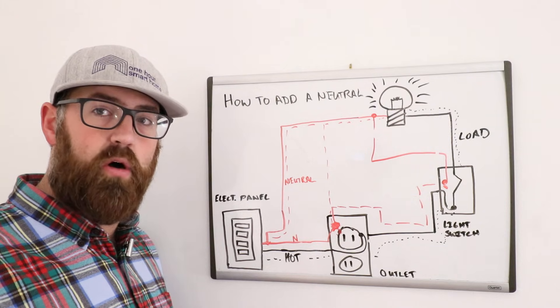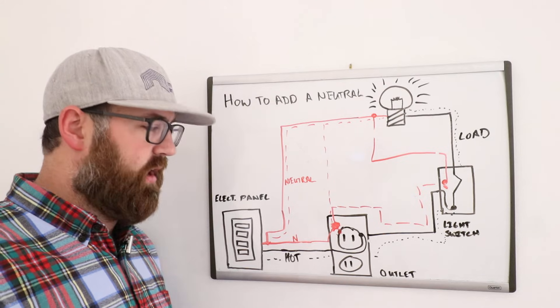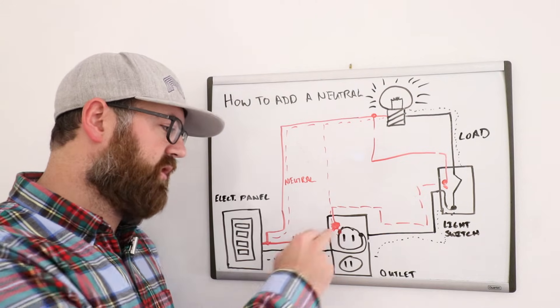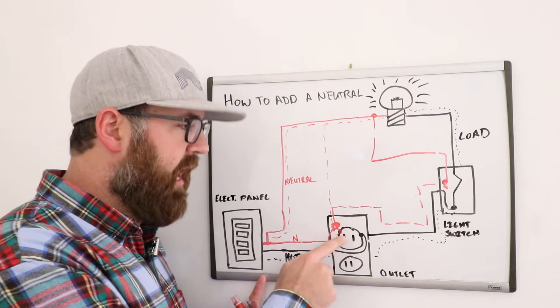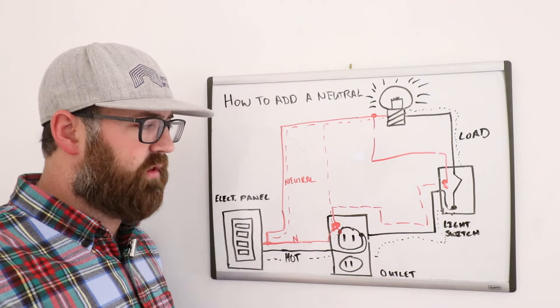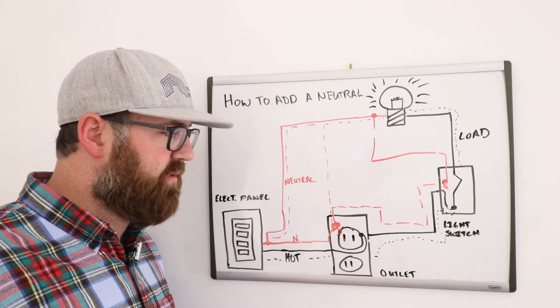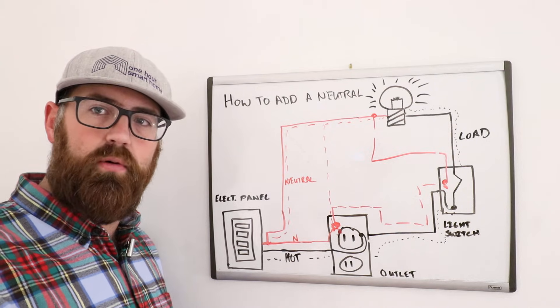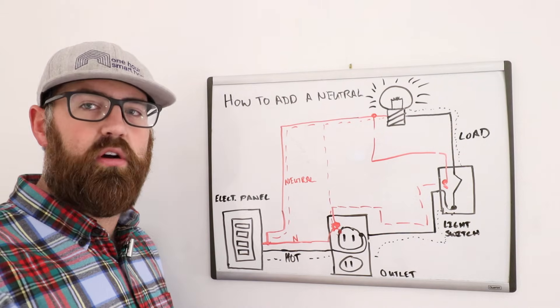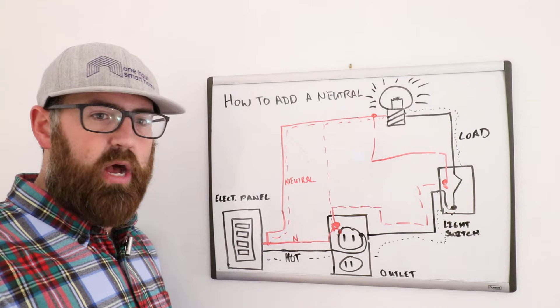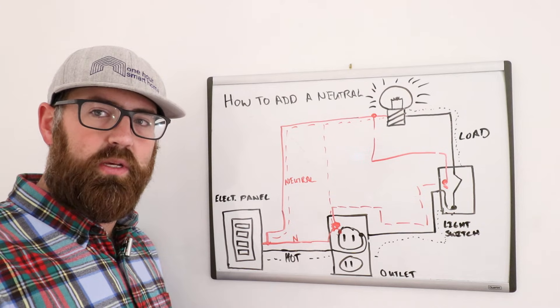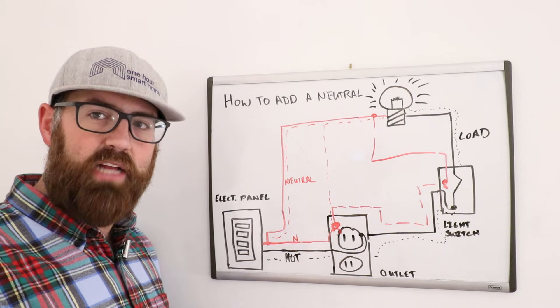But it's going to require you to open up walls unless you have conduit. If you have conduit, you could go to this outlet, and you could push a wire from the outlet to the light switch, or you could pull it, depending on how that conduit is shaped and how many wires are already in there and everything else. But it is possible with conduit, and it is also possible without conduit. It just means that you're going to have to do some painting and patching.